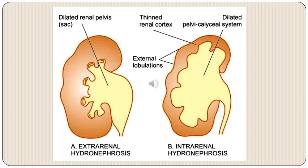Two terms describe obstructive uropathy: extrarenal and intrarenal hydronephrosis. Extrarenal hydronephrosis develops early in the course of disease — predominantly the renal pelvis is dilated and renal parenchyma is relatively preserved. Later, if obstruction is not relieved, the calyces also dilate and because of back pressure renal parenchymal atrophy begins, with sterile or infected fluid accumulating in the kidney, ultimately converting it into a big bag with just a rim of renal parenchyma at the periphery.